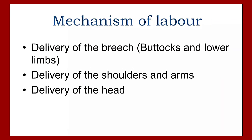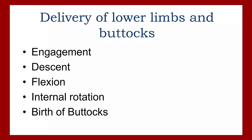When we discuss the mechanism of labor, it is divided into three parts. First is delivery of the breech, which includes buttocks and lower limbs. Next is delivery of the shoulders and arms. The last is delivery of the head. All three mechanisms must be completed for the breech mechanism to be considered complete.